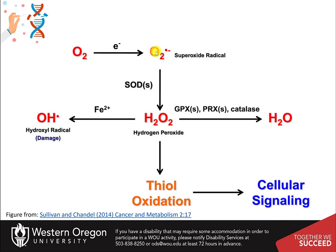ROSs can be produced as one species and then interconverted by enzymatic reactions into other reactive products. One of the most damaging is the radical superoxide. Superoxide is formed from molecular oxygen by gaining a single electron from an NADPH oxidase NOx enzyme, or from electron leak in the electron transport chain of the mitochondria. Superoxide dismutase enzymes convert two superoxide molecules into peroxide and an oxygen molecule. Hydrogen peroxide can undergo Fenton chemistry with iron to form a hydroxyl radical, which is extremely reactive and can cause cellular damage. Hydrogen peroxide can also modify redox-sensitive cysteine residues to change cellular signaling.